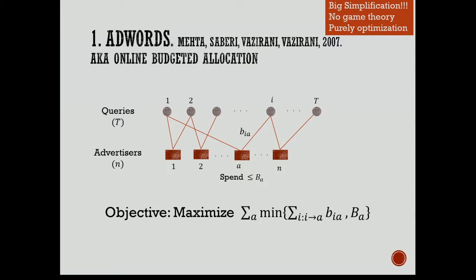It was motivated by budget management in search ads. An important thing this paper did was they greatly simplified this problem. The actual problem has so many bells and whistles, it's hard to wrap your head around. They took out a very clean version. All the game-theoretic aspects were removed and they converted it into a pure optimization problem. There are N advertisers, each beginning the day with some budget. Queries come one by one; whenever you get a query, you see the bids and allocate it to one advertiser, collecting B_ia from his budget. Once the budget is spent, you cannot collect any more money.